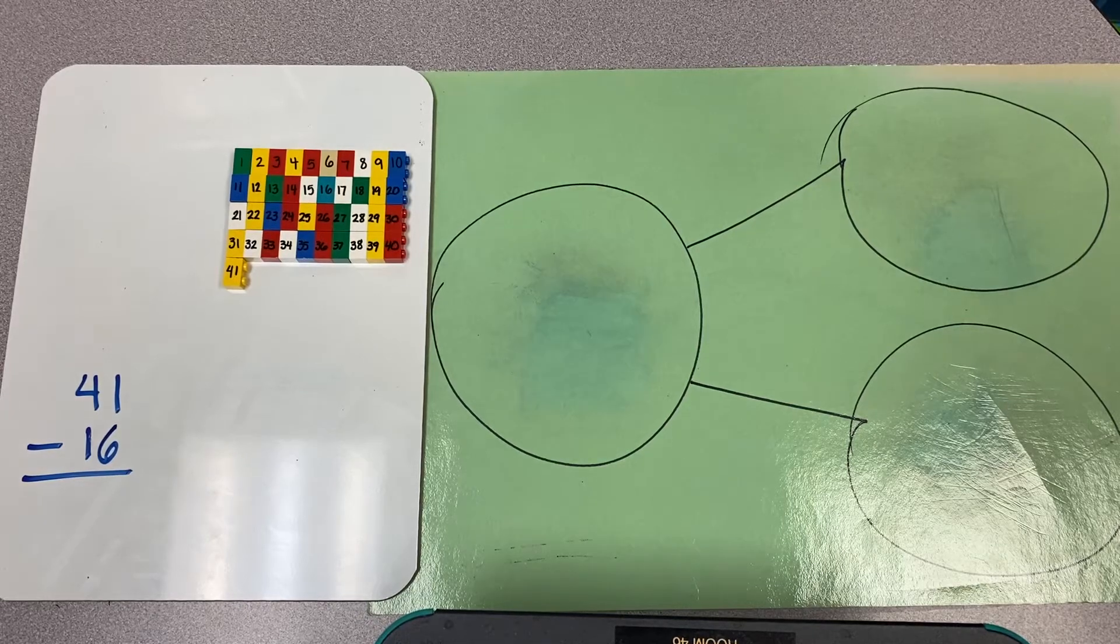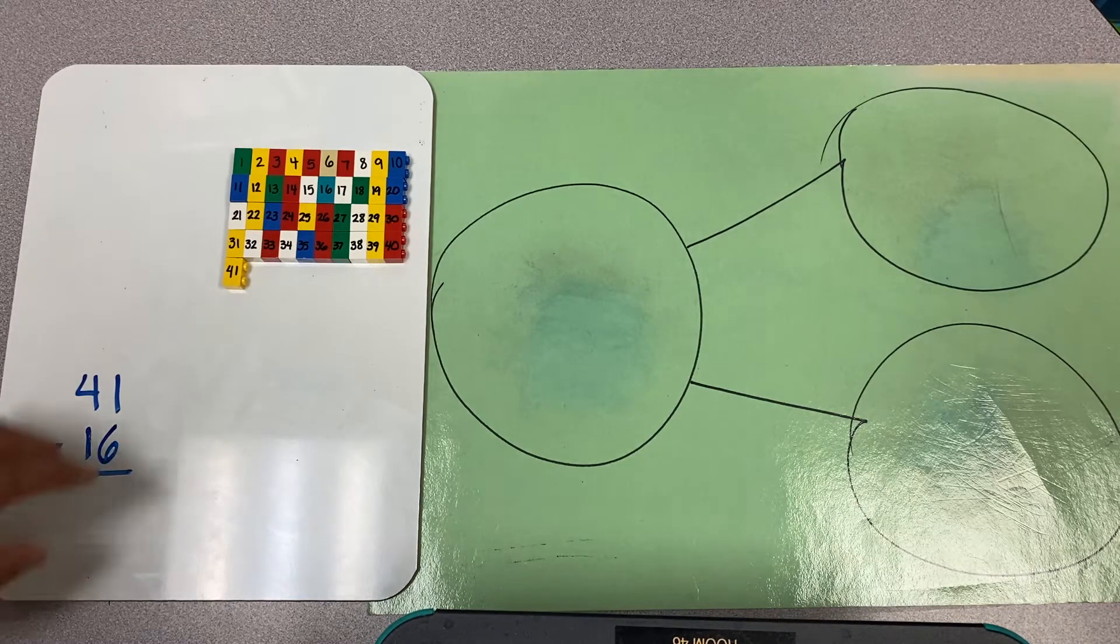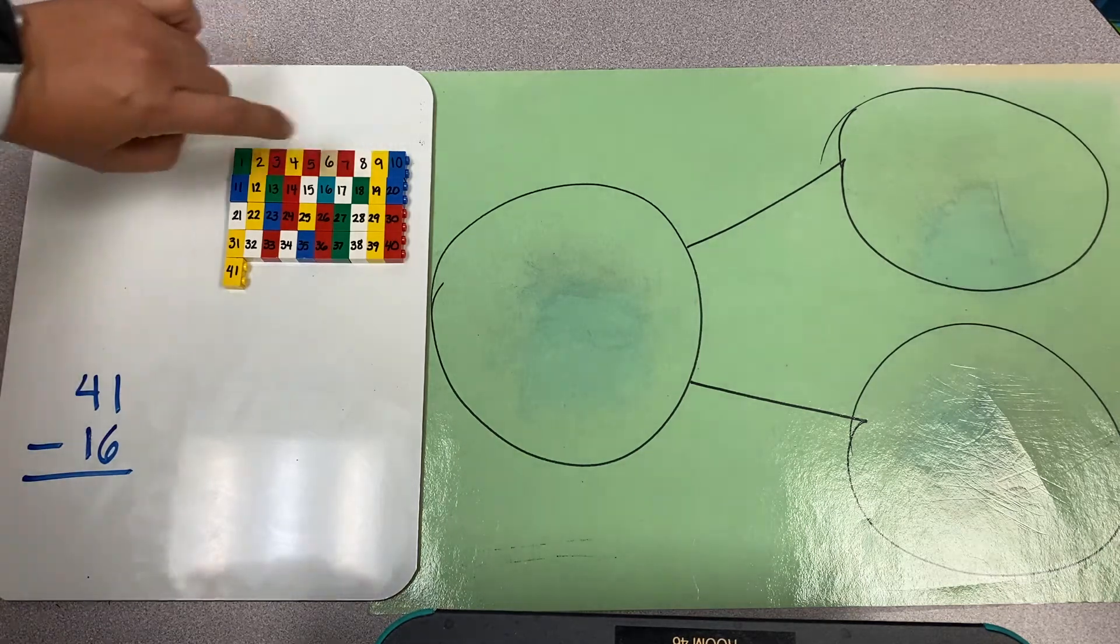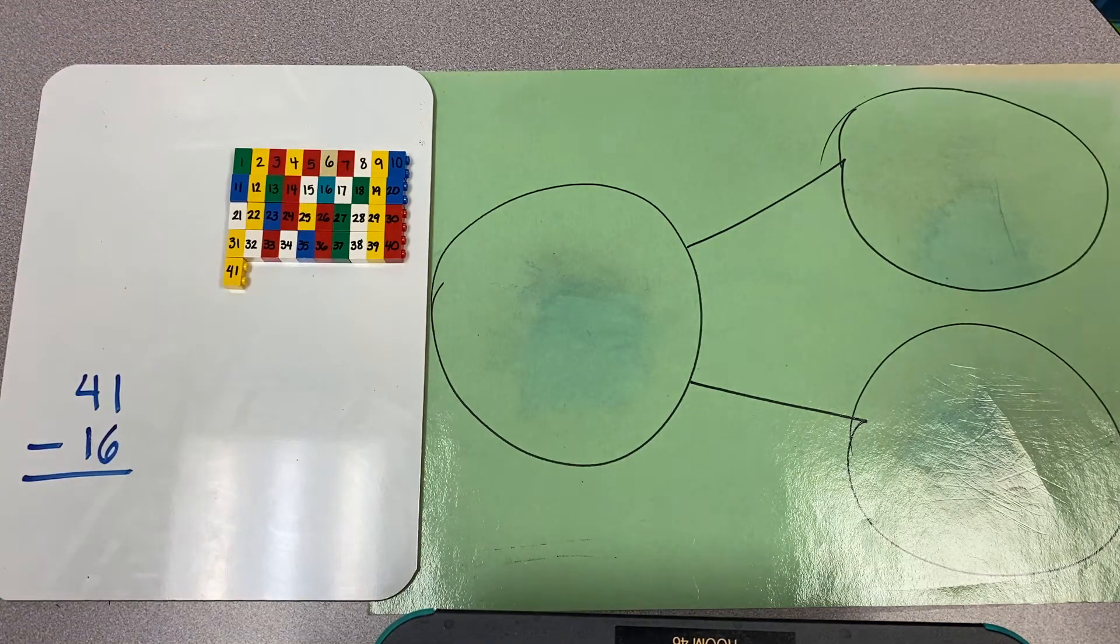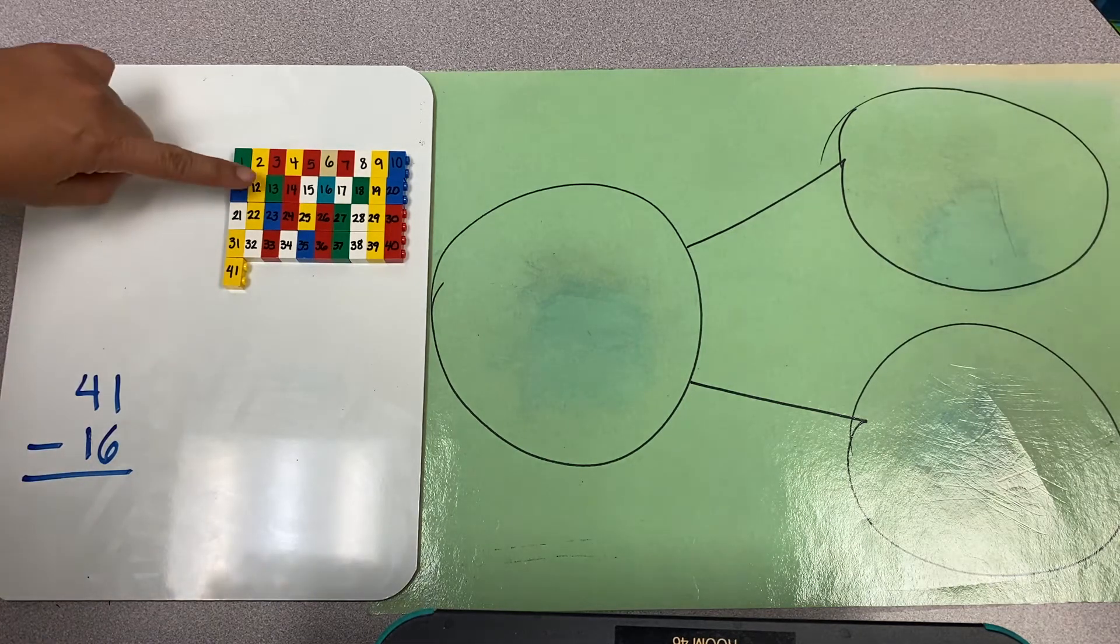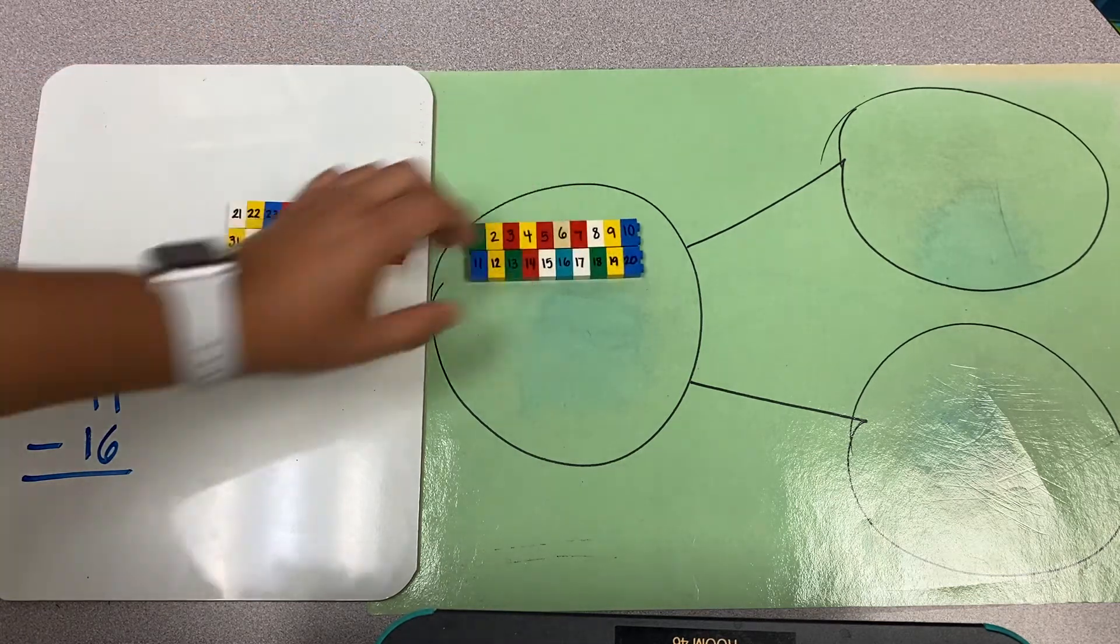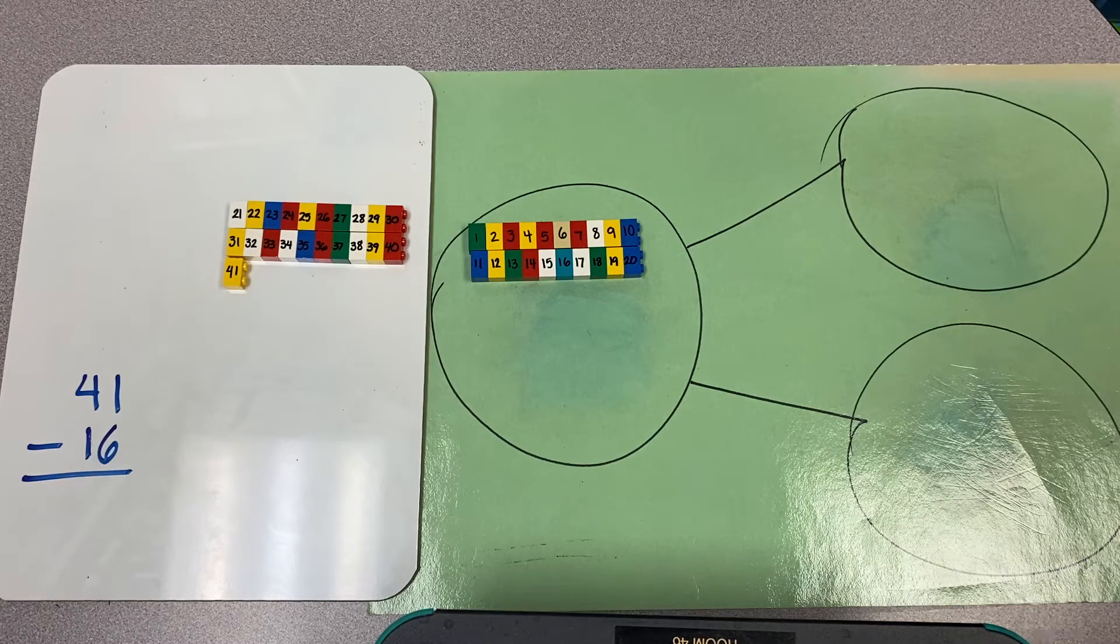Let's use the mental math strategy to subtract 41 minus 16. I have my 41 pieces here by tens and then the one to make 41. I'm going to take away 16, so I find 16 is in this line. I take the two lines with me, or the two tens with me.